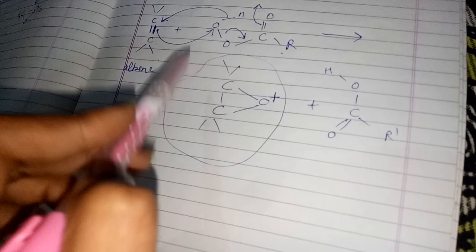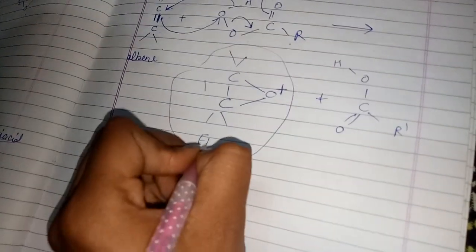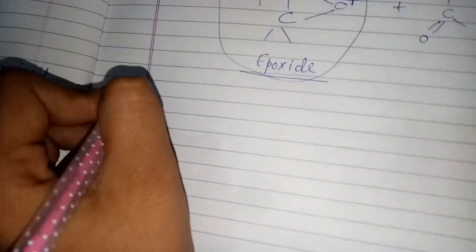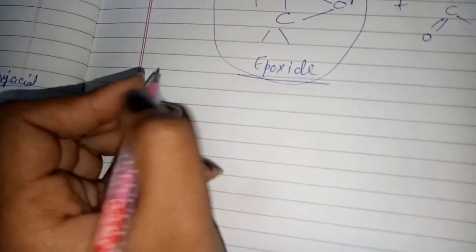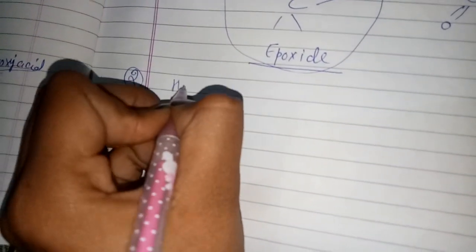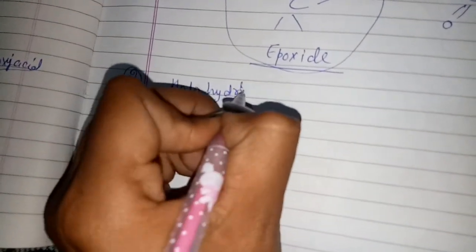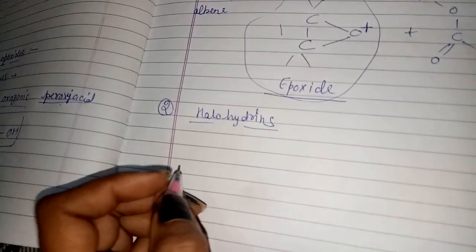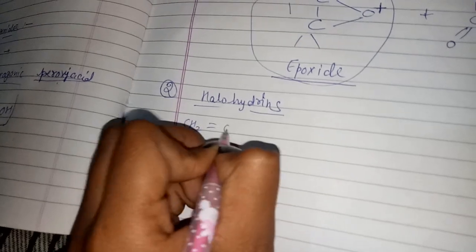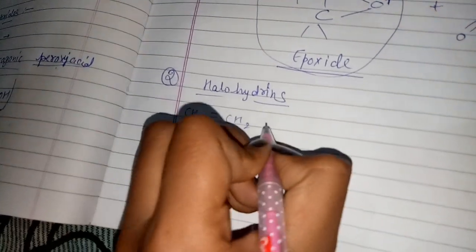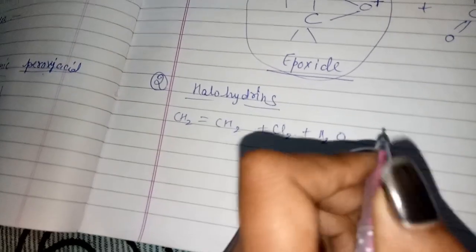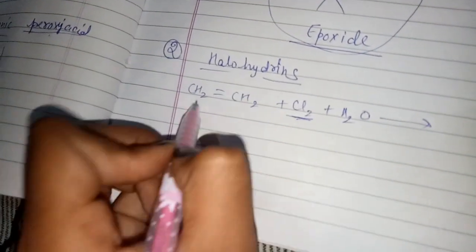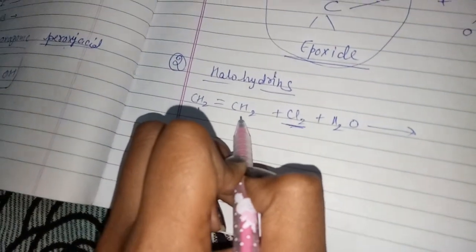This is our epoxide. Epoxides can also be formed by halohydrins. For example: alkene plus Cl2 plus H2O gives epoxidation, where we have two chlorine atoms on the carbons.